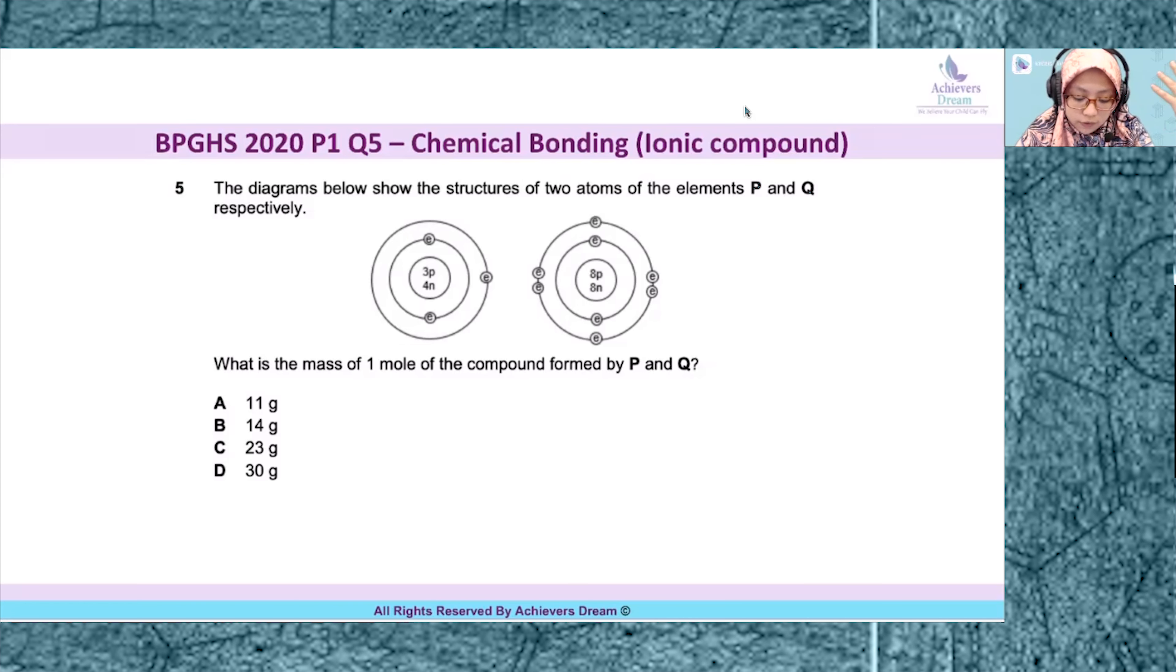So you are given diagrams or structures of two atoms of elements P and Q respectively. What is the mass of one mole of the compound formed by P and Q? So whenever you have this type of question, what I will do is to actually identify what is P and what is Q. So how do you identify atoms? You identify atoms based on proton number.